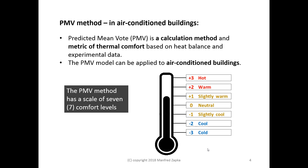The PMV defines seven scales of comfort level between plus 3 and minus 3. In the middle, 0 is neutral — you can neither feel warm nor cold. Going up: slightly warm, warm, and hot; plus 3 is hot. On the other side, minus 1, minus 2, minus 3 determine the degree of increasing coldness.